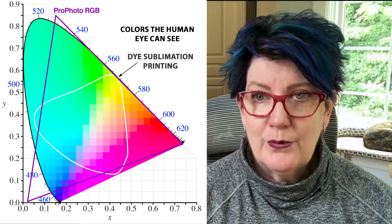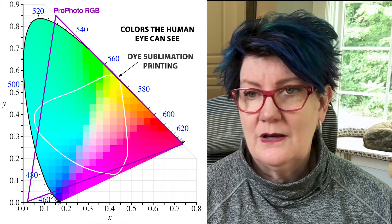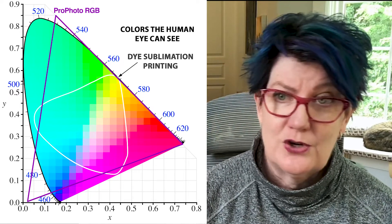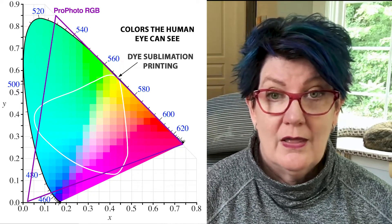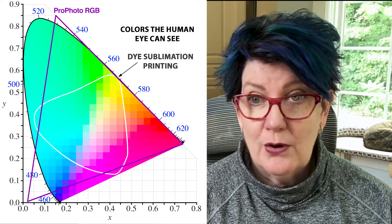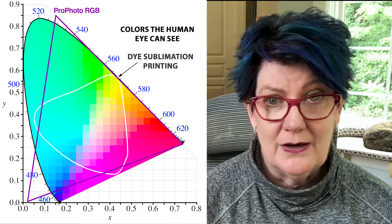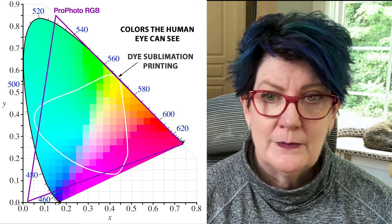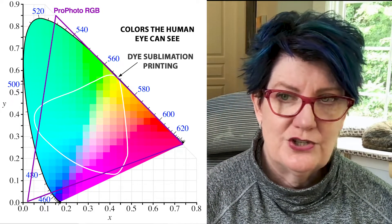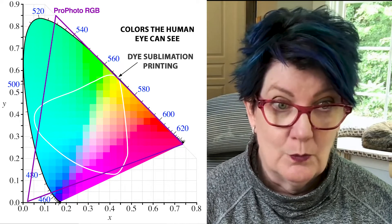A typical CMYK printer using regular inks out of the box has an even smaller color subset than sublimation printing. Sublimation printing has a different profile — it's larger than sRGB and Adobe RGB in some areas but smaller in others, so you can typically print more colors in sublimation than you can with regular desktop CMYK inks.